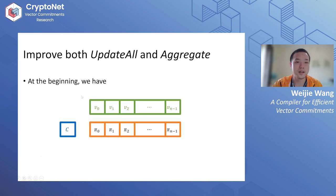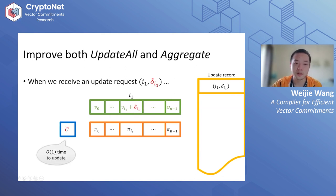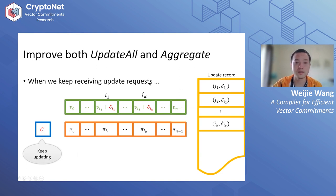At the beginning of our compiler, we have a vector, a commitment to it, and all the open proofs. This is the initial state. When we receive an update request to update position i1 by delta i1, we put the request into an update record list, use the O(1) commitment update algorithm to update the commitment, and update the vector in our list.